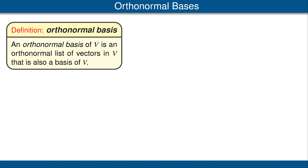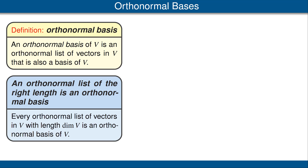An orthonormal basis is defined to be an orthonormal list of vectors that is also a basis of our inner product space V. Our next result states that if we have an orthonormal list of vectors in V and the length of that list is the dimension of V, then our list is an orthonormal basis. The proof: by our previous result, the orthonormal list is linearly independent, and a linearly independent list whose length equals the dimension of the vector space is a basis.